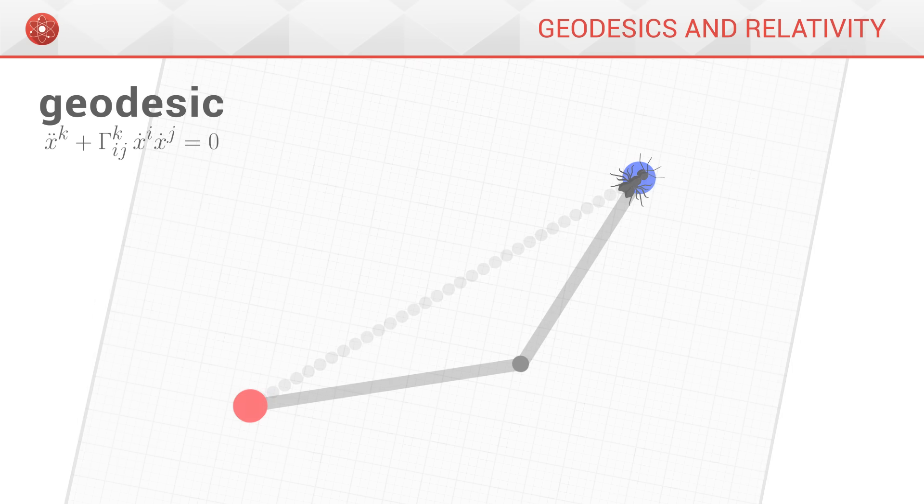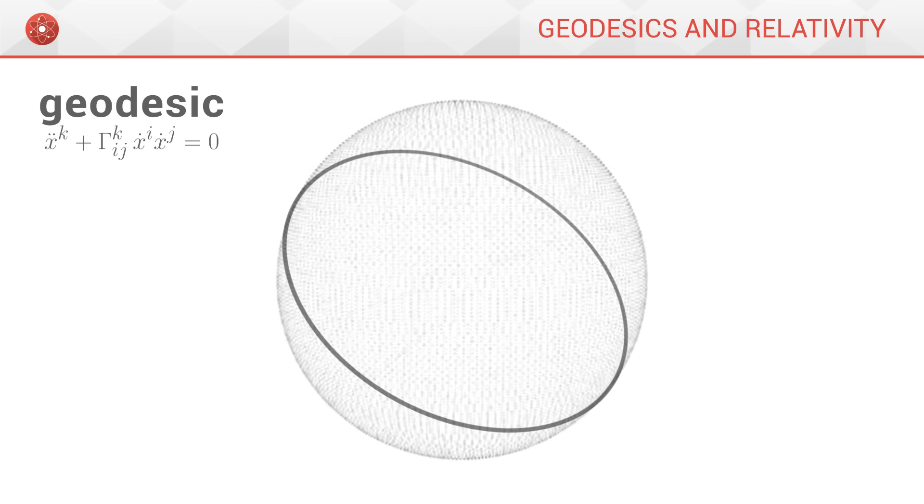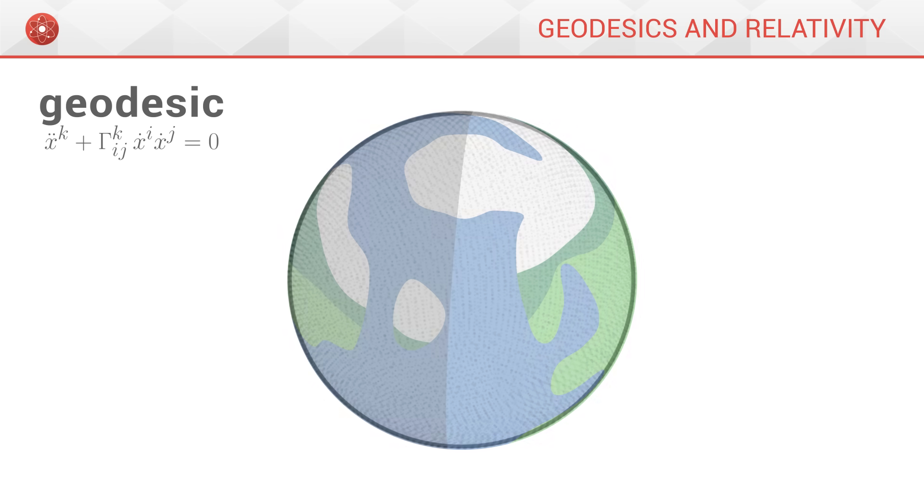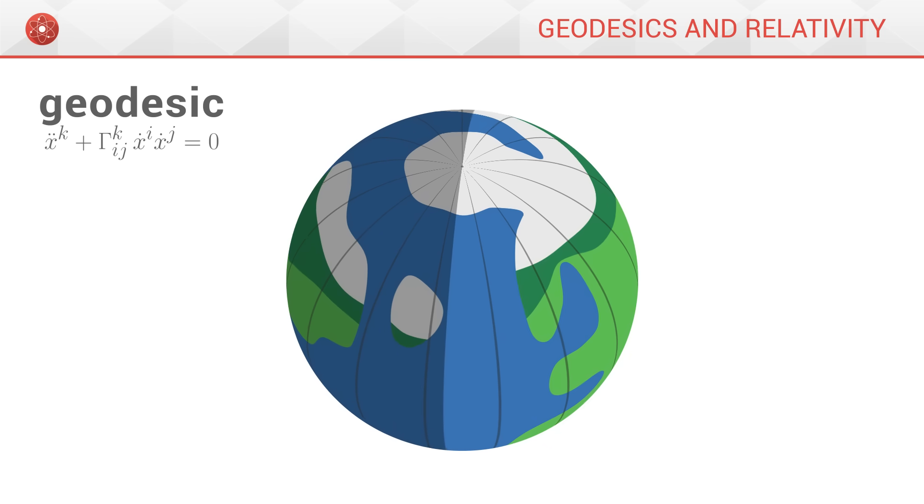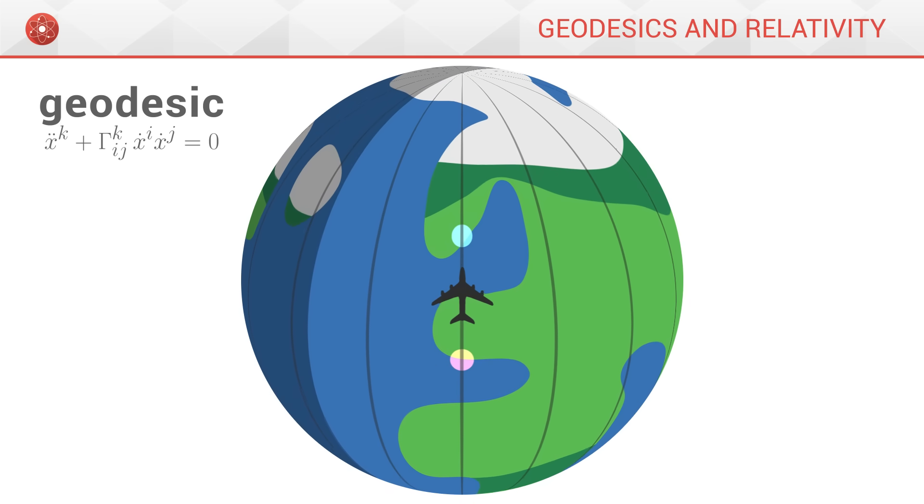On the surface of a sphere, the geodesics are known as great circles. They cover the greatest possible circumference. On Earth, for example, lines of longitude are geodesics. A flight from Rome to Copenhagen will only be as short as possible when following this precise curve.